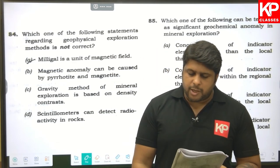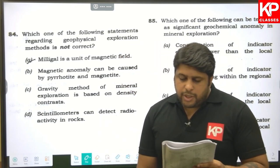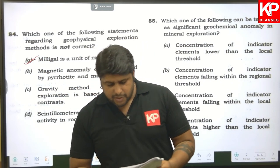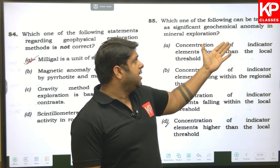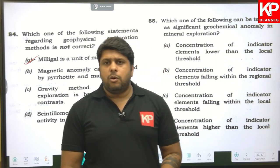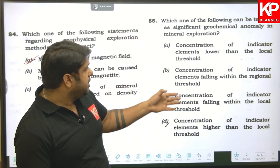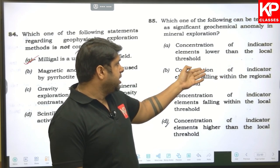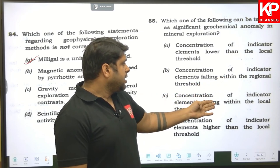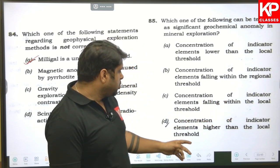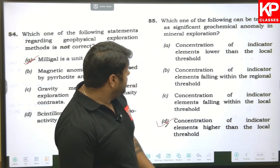Question eighty-four: which statement regarding geophysical exploration methods is not correct? Milligal is stated to be a unit of magnetic field — this is wrong, milligal is a unit of gravity (not magnetic field). So A is the answer. Question eighty-five: which can be termed a significant geochemical anomaly in mineral exploration? An anomaly is when values exceed expected ones — concentration of indicator elements higher than the local threshold is correct. D is the answer.